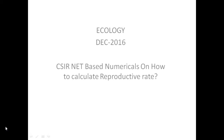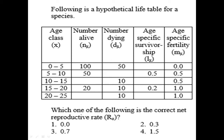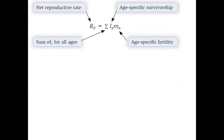Today we will discuss CSI-based numericals on reproductive rate calculation, a question which is very common in ecology and has been asked many times. We are given a hypothetical life table for a species where age class, number living, number dying, survivorship, and age-specific fertility are provided. We are supposed to calculate the reproductive rate. The formula of reproductive rate is R₀ = summation of Lx × Mx.